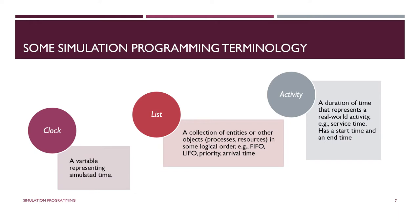The state of the system is the set of values of a collection of state variables at a particular moment in time. The simulation clock is a variable that contains a value representing simulated time, usually starting from zero. A list is a collection of objects in some kind of order — simulation programs use lots of lists, one obvious example being the queue, a list of entities waiting for service. An activity has a start time, a stop time, and a duration, representing an activity in the real world — one example would be a service.